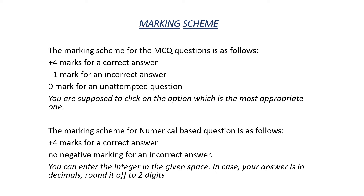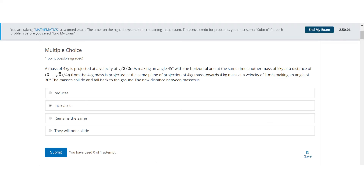You can enter the integer in the given space. In case your answer is in decimals, round off to two digits. There will be two options available to you right below the options of the question: submit option and save option.